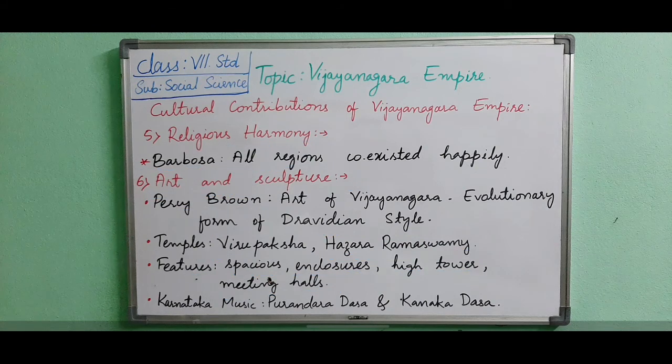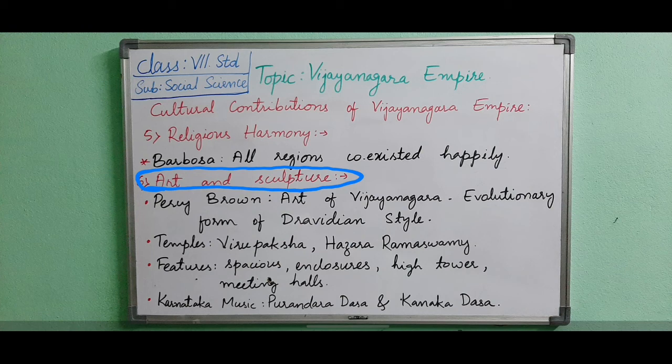Another major contribution is the Vijayanagara stone chariot. An idol of Narasimha and Ganapati illustrate the monolithic stone sculpture of Vijayanagara. Chariot means an open vehicle with two wheels used at temple festivals. Monolithic means when an object is made from a single standing block of stone.